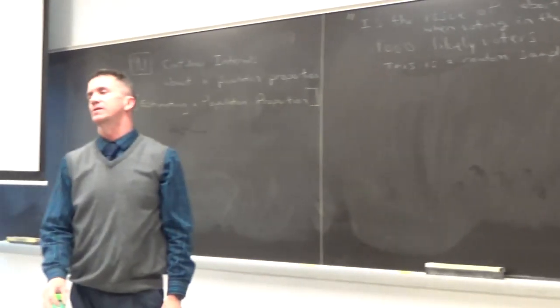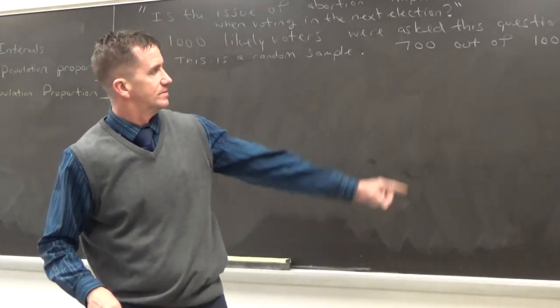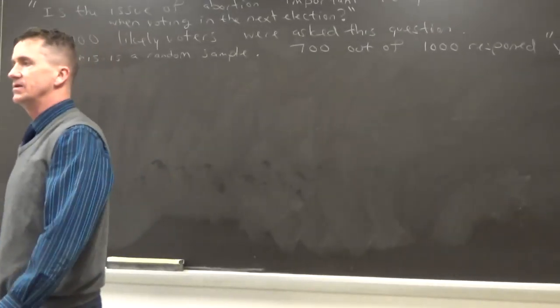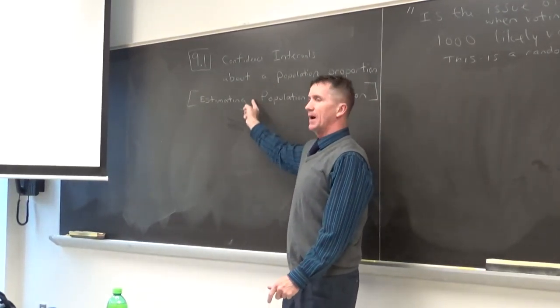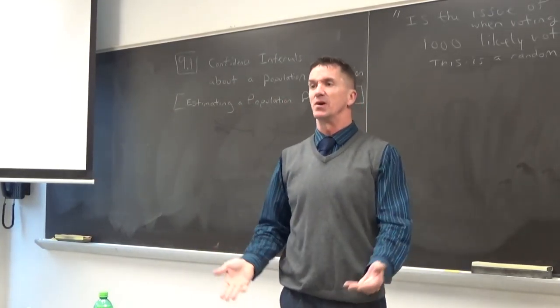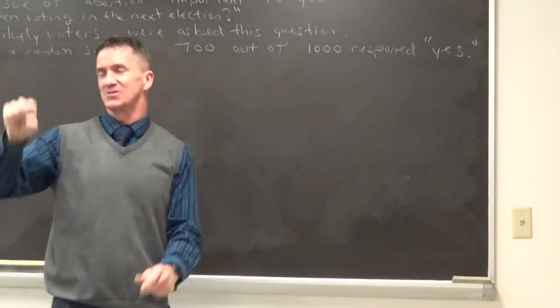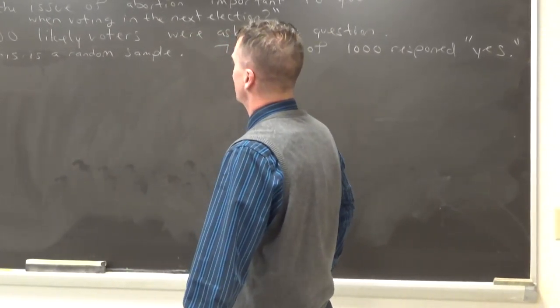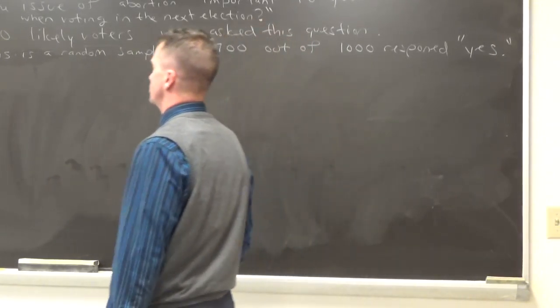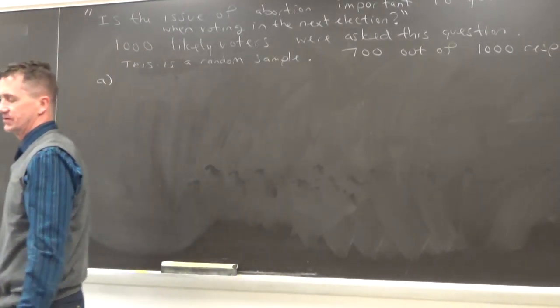And we're going to construct a confidence interval about what is the proportion. See, that's just seven hundred out of a thousand. And what we're trying to do today, everyone, we're trying to see what's going on in the entire population. All likely voters in the United States. So, we're talking about millions of people. But that was only just a group of a thousand. It's a big difference. Well, that's how we do it. And it's called inferential statistics. So, the first thing we're going to do before we construct the confidence interval, the first thing we always do, everyone, we're just going to verify our requirements for this.